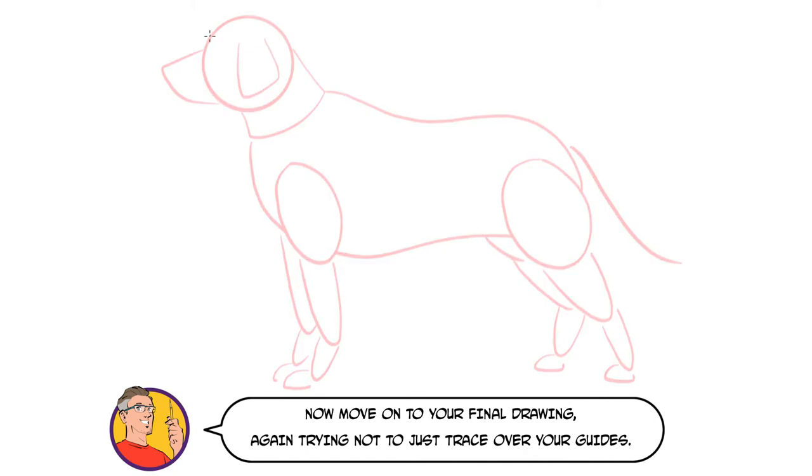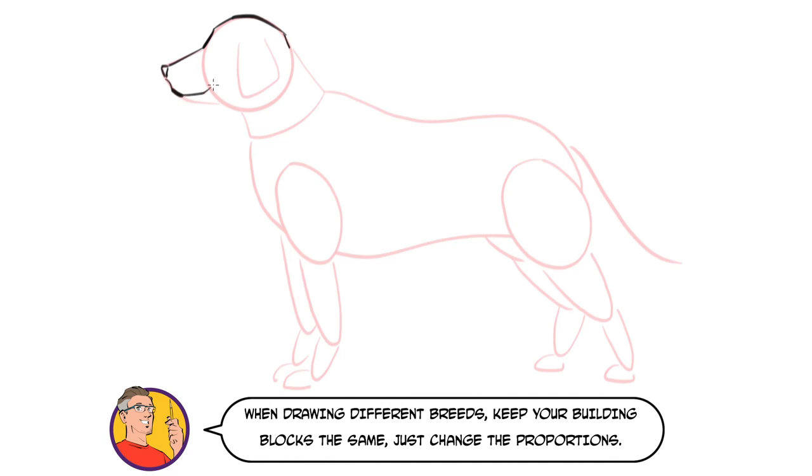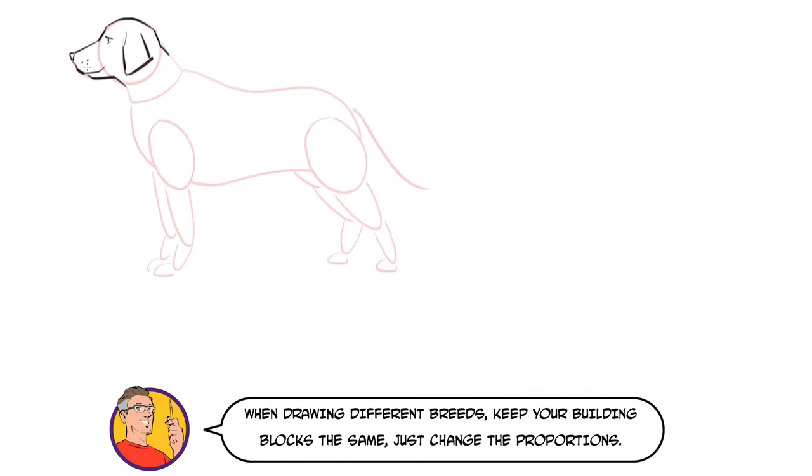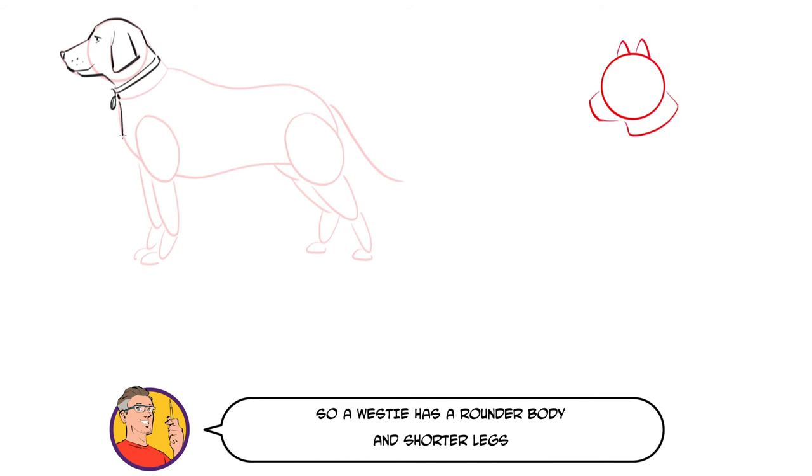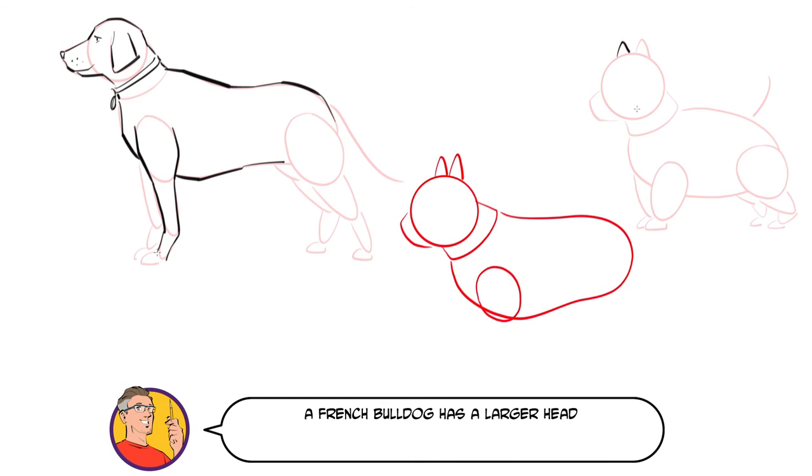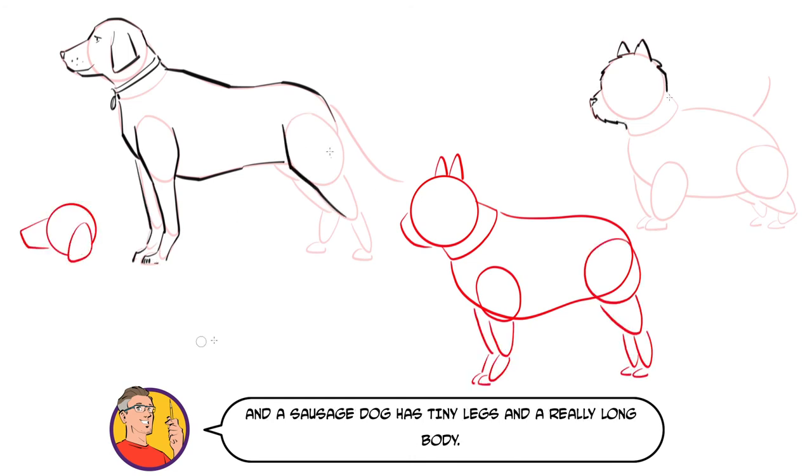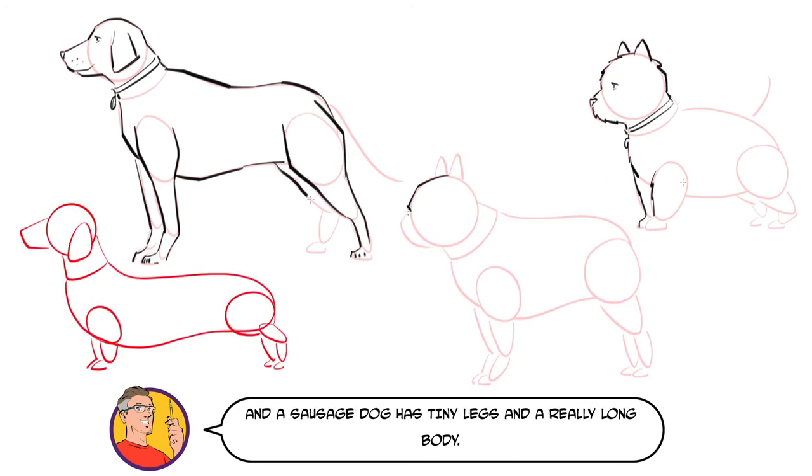Now move on to your final drawing. Again try not to just trace over your guides. When drawing different breeds keep your building blocks the same, just change the proportions. So a Westie has a rounder body and shorter legs. A French Bulldog has a larger head and a sausage dog has tiny legs and a really long body.